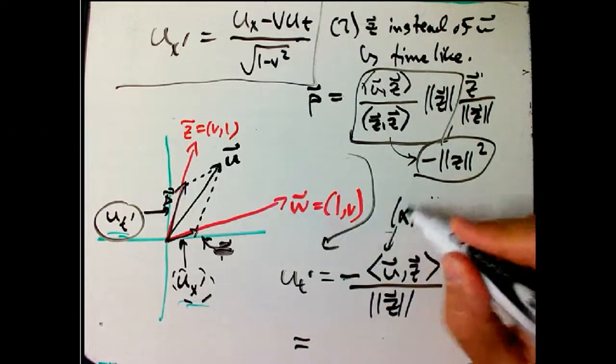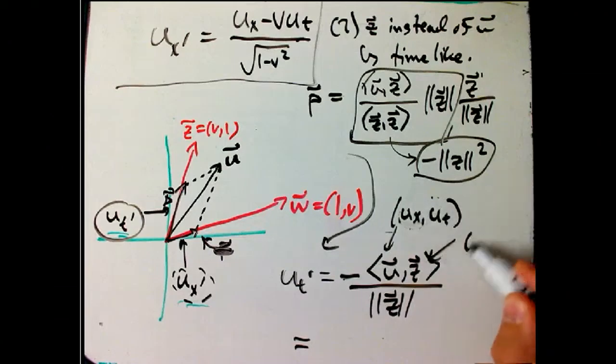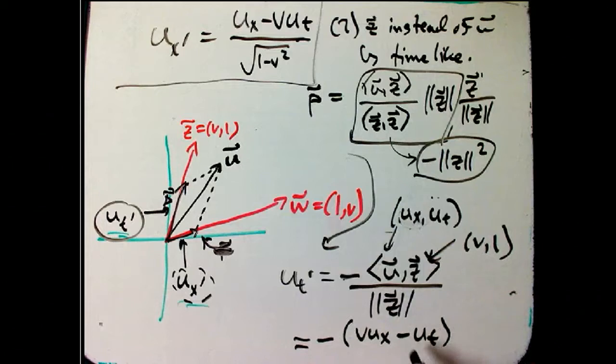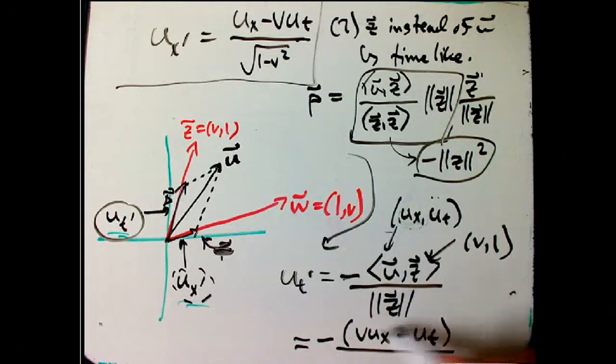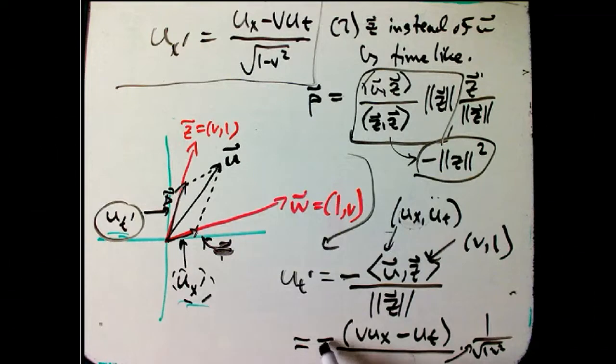So this is (ux, ut), and this is (v, 1). So we're getting it minus, and then that's v·ux minus 1 times ut. So again, I just totally spaced the minus coming from the Minkowski's scalar product. Then divided by the magnitude, that's still gamma, times 1 over root 1 minus v squared. My camera has shifted, I guess, because that's in the denominator. I hope you could see the rest of the other part before. And then this minus flips these guys.